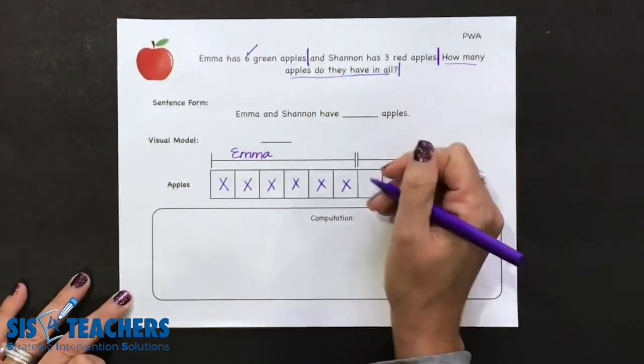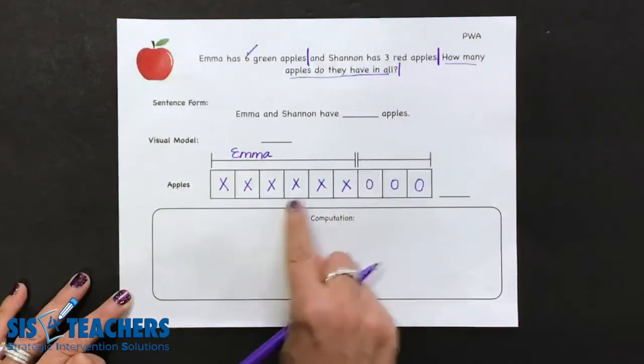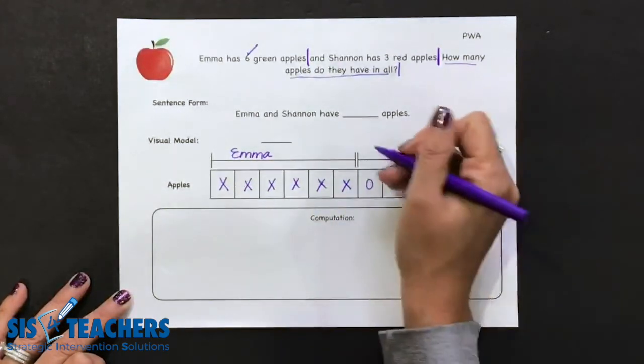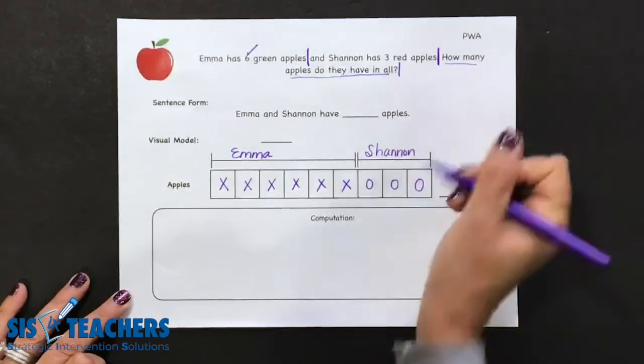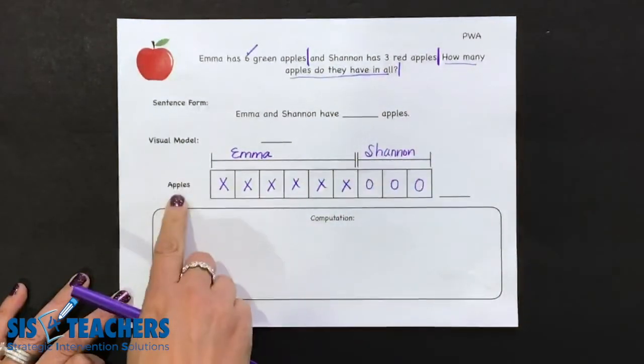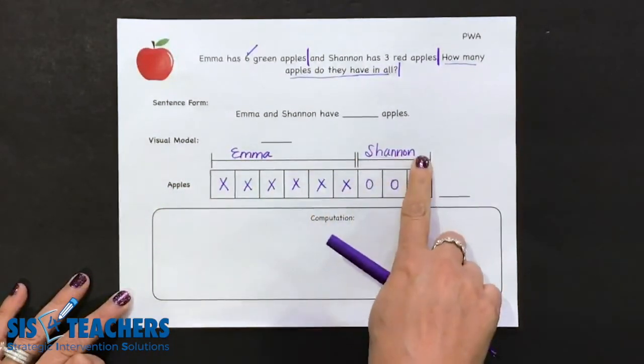Shannon has three red apples. So I'm going to indicate Shannon's apples just with circles to indicate they belong to two different people and put Shannon at the top. You also could put a different label here. You could have put Emma and Shannon's apples and written here green and here red.